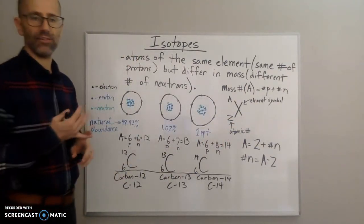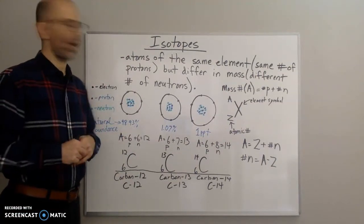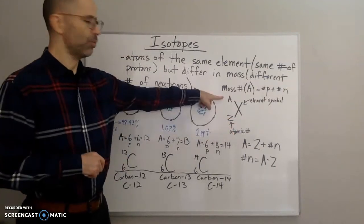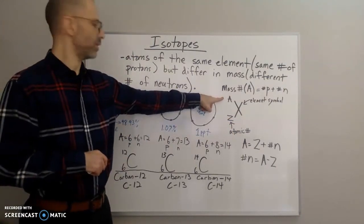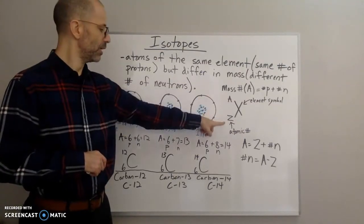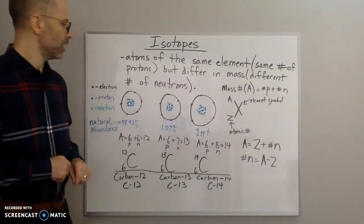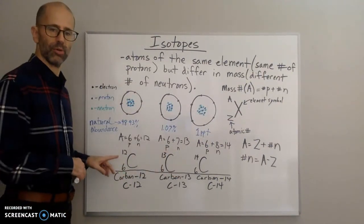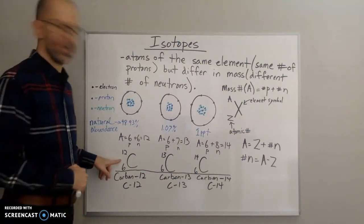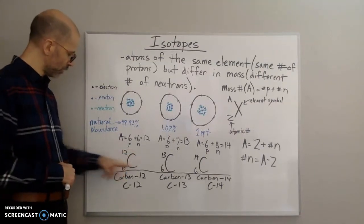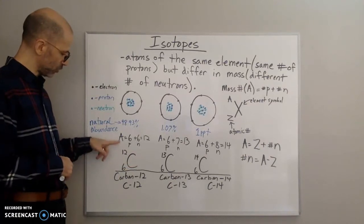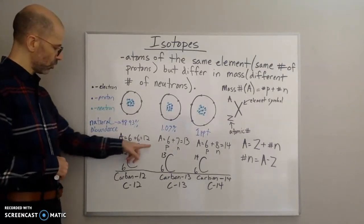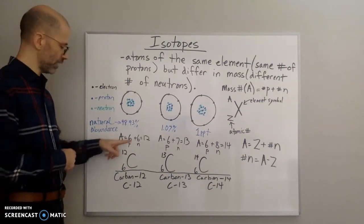We represent isotopes in two notations. In the first, you write the element symbol X with the mass number on the top left and the atomic number on the bottom left. For example, for carbon-12: the symbol is C, with 12 on top because six protons plus six neutrons equals 12, and 6 on the bottom as the atomic number.